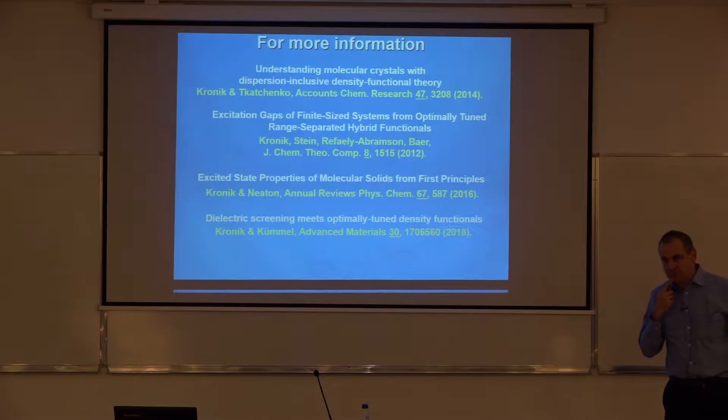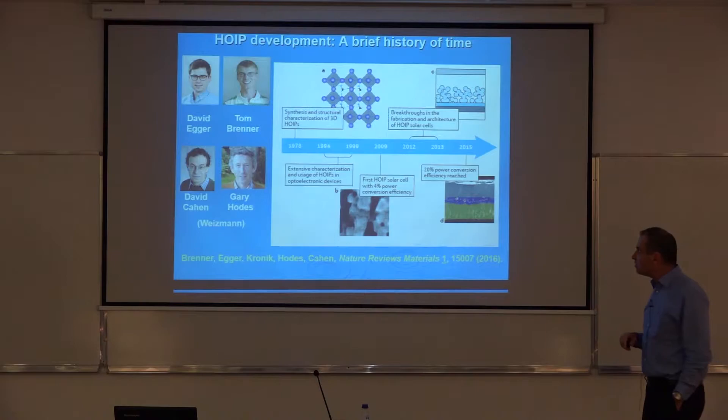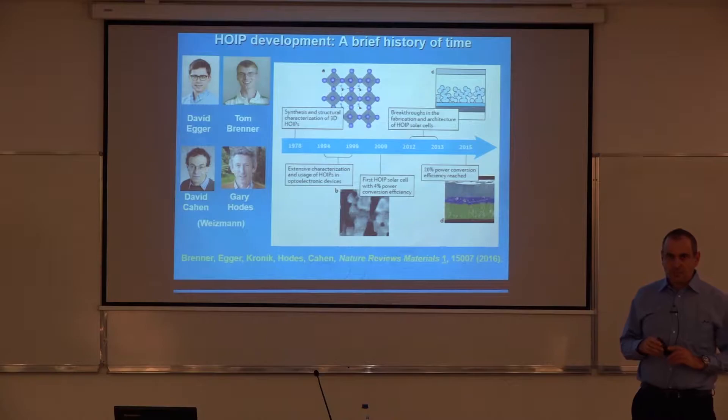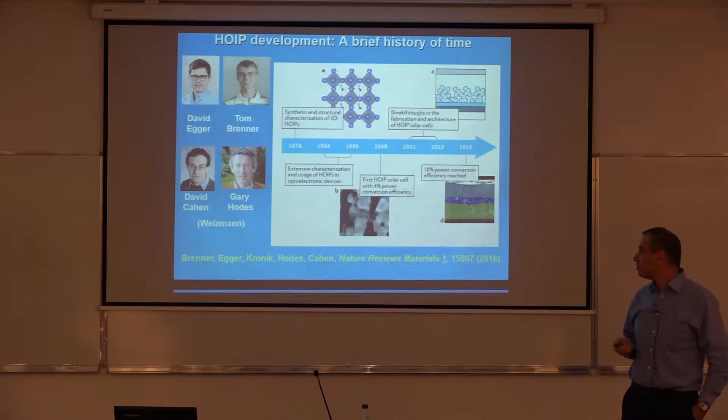Now I'll move on to the second part of my talk, which has to do with hybrid organic-inorganic solids. A hybrid organic-inorganic solid is a crystalline solid that is partly comprised of an ionic and/or covalent network of atoms, and partly also has molecules that are really part of the unit cell — not just impurities or something like that.